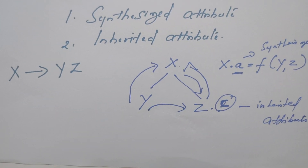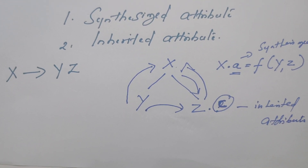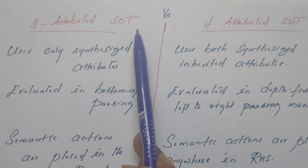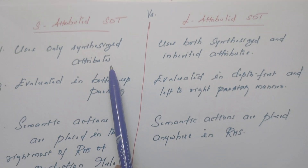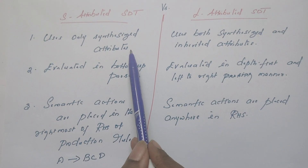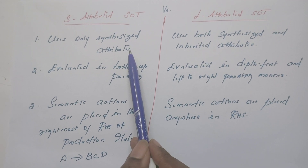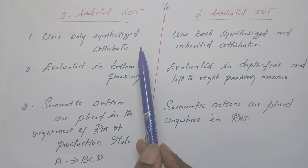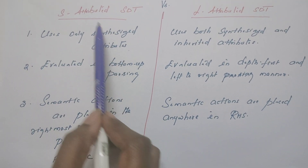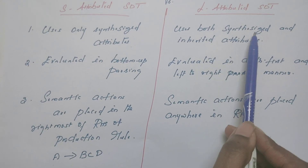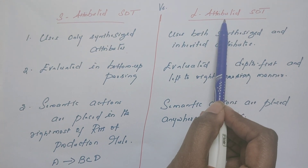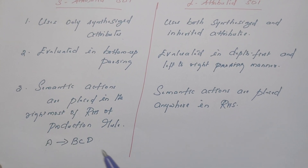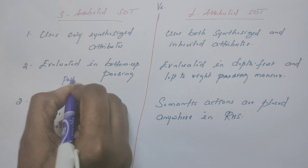So these are the two types of attributes associated with grammar symbols in context-free grammar. Now let us discuss about S-attributed and L-attributed SDT. In S-attributed SDT, the entire grammar contains only synthesized attributes. In general, if a grammar is further explained with the help of attributes, it becomes attributed grammar. If it uses only synthesized attributes, it is S-attributed. If it uses both synthesized and inherited attributes, it is L-attributed SDT. S-attributed SDT can be evaluated using bottom-up parsing, or it can be evaluated in post-order traversal.